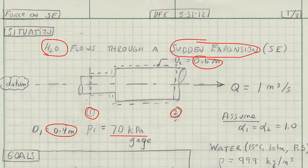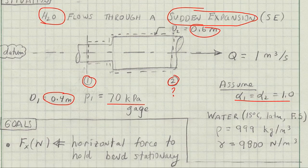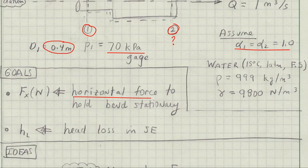and the pressure at 2, P2, is unknown. Assume the kinetic energy correction factors are 1. The goal is to find the horizontal force and the head loss in the sudden expansion.